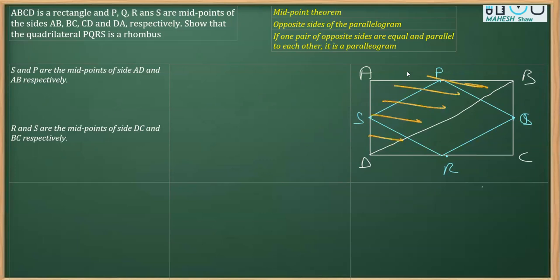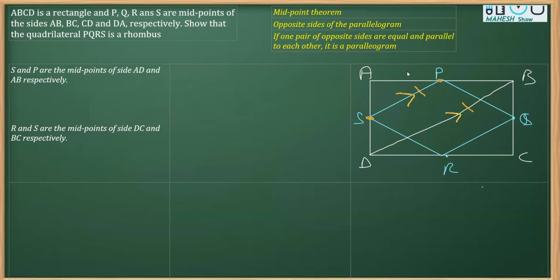In triangle ABD, P is the midpoint of AB and S is the midpoint of AD. Therefore, by the midpoint theorem, PS is parallel to BD and PS is equal to half of BD.